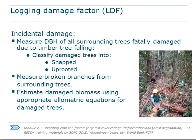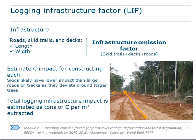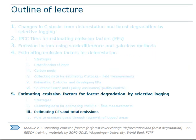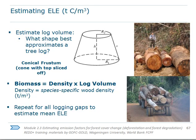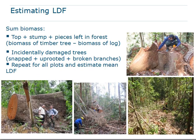For the logging damage factor (incidental damage), we measure the DBH and record the species of all trees or branches damaged during the logging operation that will die and release their carbon during decay. For logging infrastructure, we use a different approach: we measure the area deforested to build roads, trails, or decks, and multiply this area by an average carbon stock per hectare — similar to the IPCC Tier 1 approach for deforestation emission factors.